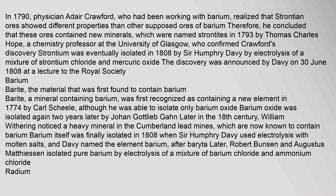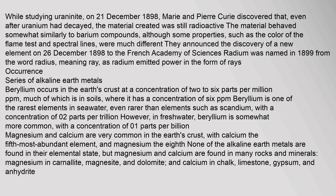Barite, a mineral containing barium, was first recognized as containing a new element in 1774 by Carl Scheele, although he was able to isolate only barium oxide. Barium oxide was isolated again two years later by Johann Gottlieb Gahn. Later in the 18th century, William Withering noticed a heavy mineral in the Cumberland lead mines, now known to contain barium. Barium itself was finally isolated in 1808 when Sir Humphrey Davy used electrolysis with molten salts. Robert Bunsen and Augustus Matthiessen later isolated pure barium by electrolysis of a mixture of barium chloride and ammonium chloride.